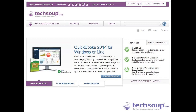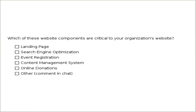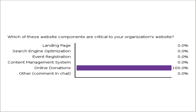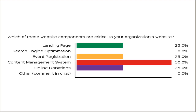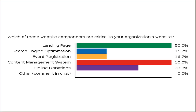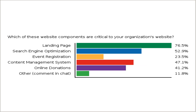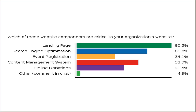Getting us started with the poll questions, I want to go ahead and have you answer which of these website components are critical to your organization's website. Go ahead and click on the ones that you think matter most to you or to your organization. This helps provide us a little bit of context for where your priorities are on your organization's website right now, and this will also help inform Jay as he gets started with his presentation. Feel free to comment in the chat.